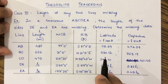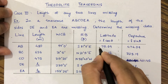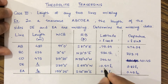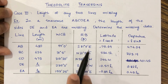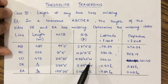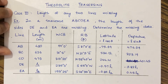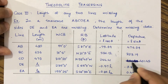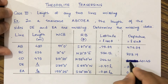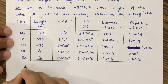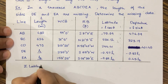Now we check the signs. The latitude for AB is towards south, so it is minus. The latitudes for BC and CD are north, so they are plus. The latitudes for DE and EA are both south, so they are minus. For departures: AB and BC are towards east, so both are plus. CD and DE departures are towards west, so both are minus. EA departure is east, so plus.